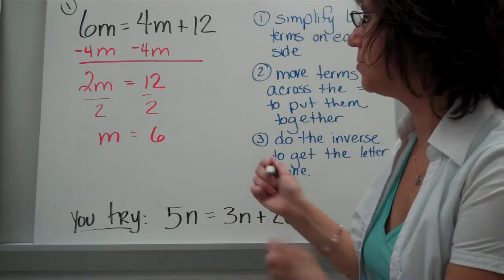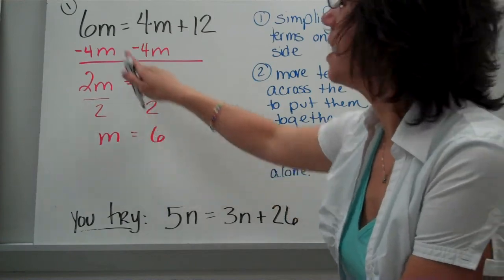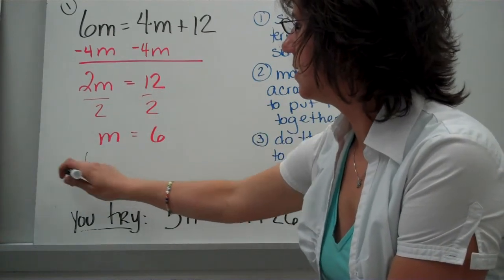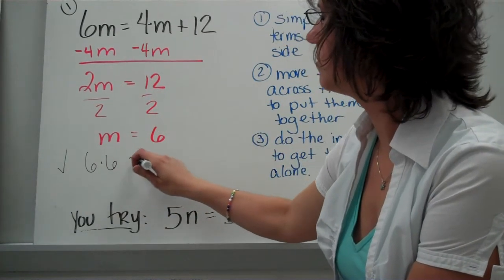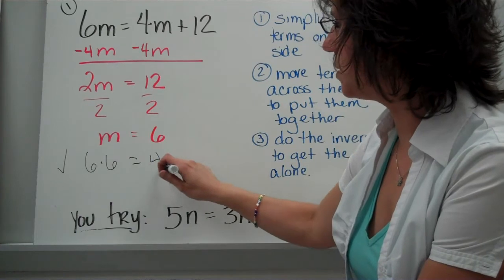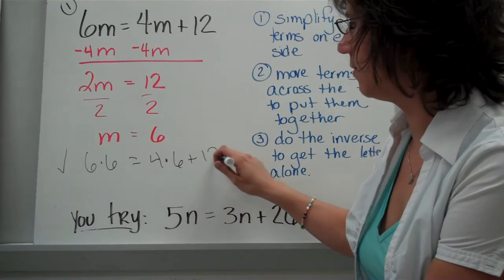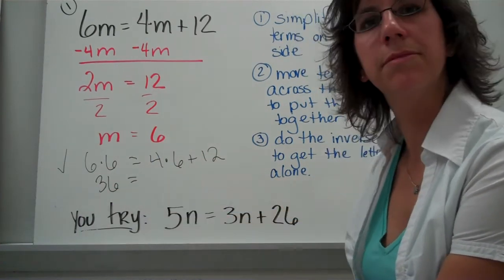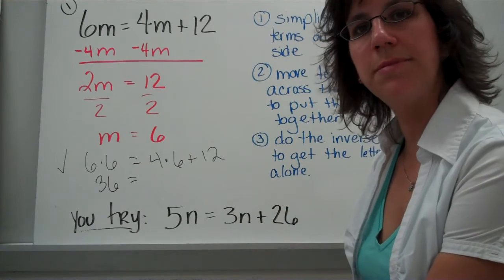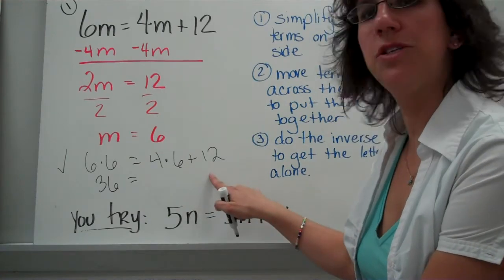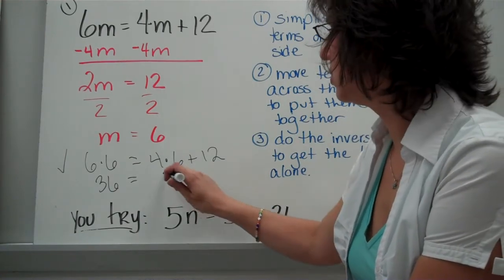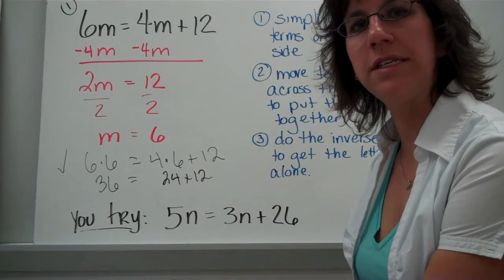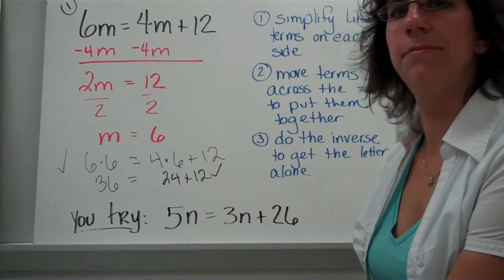Now we can check our answer by putting that 6 back into the problem. 6 times 6 — does that equal 4 times 6 plus 12? 6 times 6 is 36. 4 times 6 is 24, plus 12 more. 24 plus 12 — is that 36? It sure is.